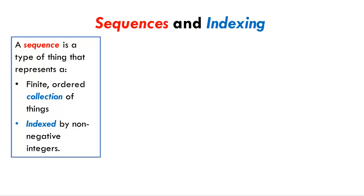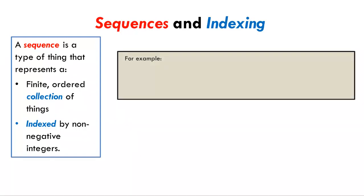Recall that a sequence is a collection of things indexed by non-negative integers. For example, here is a list that contains three strings representing colors.